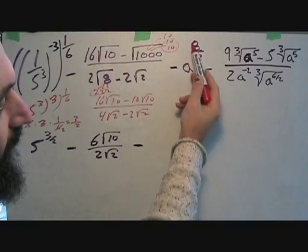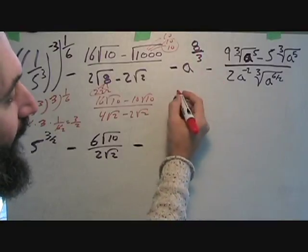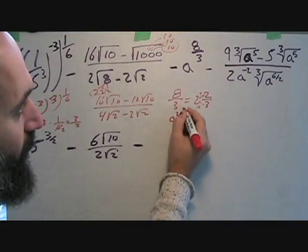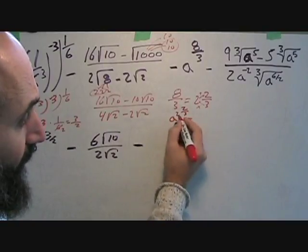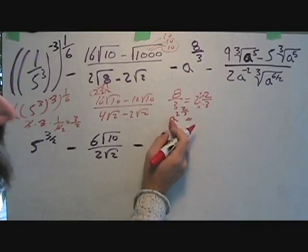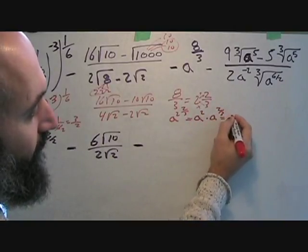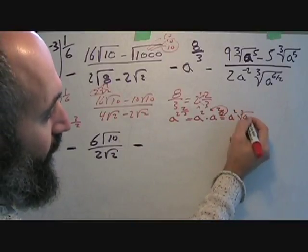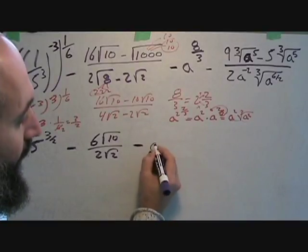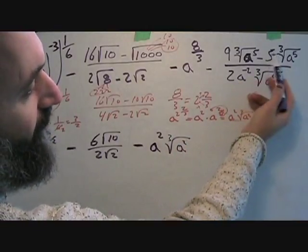Those are like terms again, giving 2√2. Now let's deal with the fractional exponent. One way is to convert it to a mixed fraction: 3 goes into 8 twice with 2 left over, so this becomes 8 to the power of 2 and two-thirds. Using the multiplication principle for exponents with the same base, you can split this: a² times a to the power of two-thirds. Two-thirds means the 3 goes in the radical — it becomes a squared times the cube root of a squared. So we go directly to our simplest form.